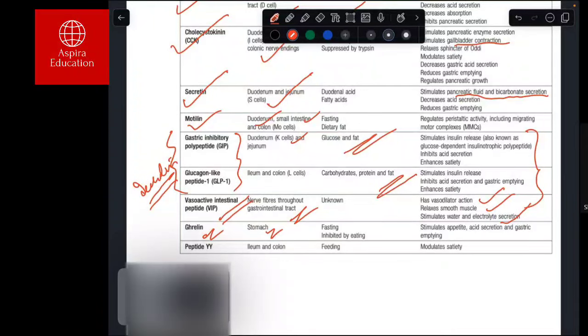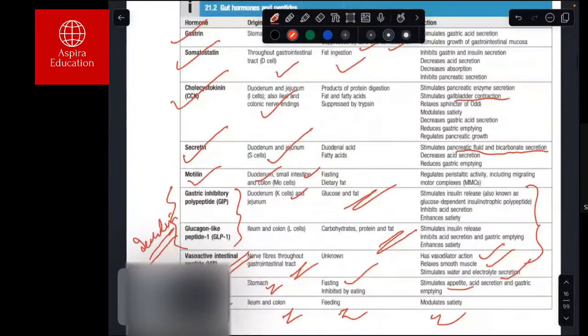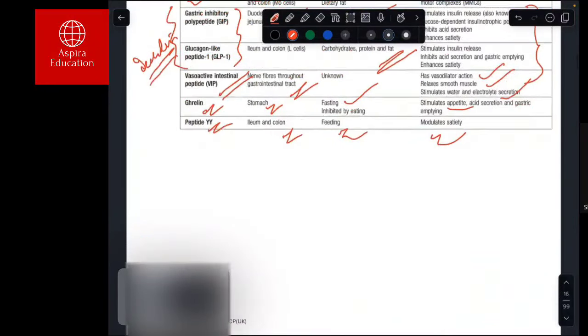There is also peptide YY, which is produced by the ileum and colon, produced by feeding, and modulates satiety. The table has all the data—go through this data. You have to be thorough with where it is produced, where it acts, what its function is, because these are all asked in your MRCP Part 1 exam.